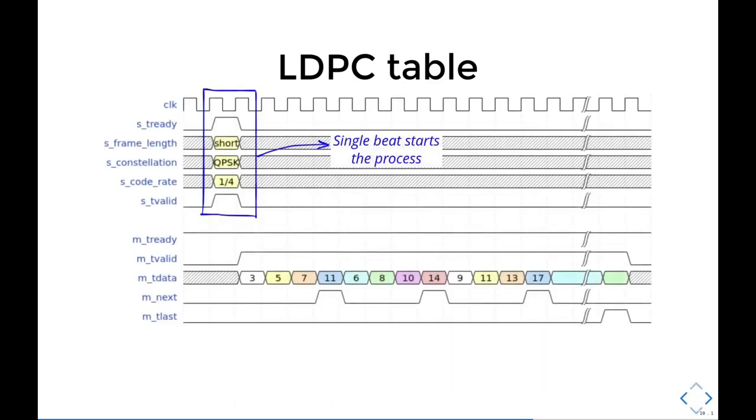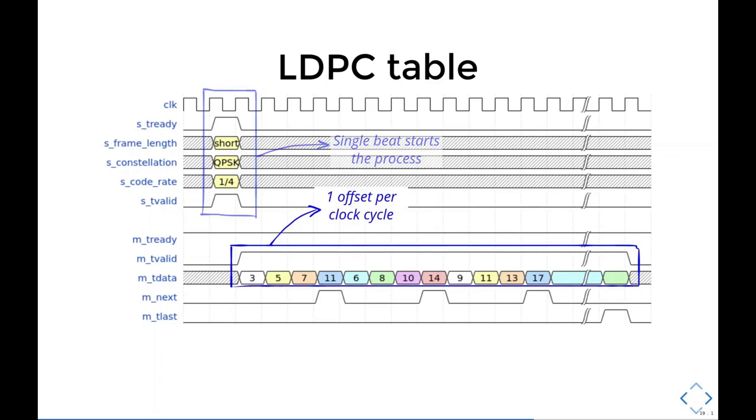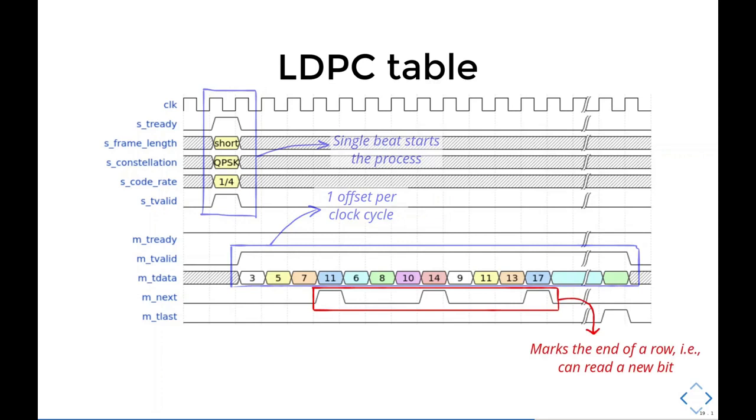Timing-wise, a single bit is going to start the process. The LDPC table then generates one offset per clock cycle. Besides the coefficients, the LDPC table generates an output called M NEXT, which marks the end of a row, that is, a new bit can be processed. This means that this period here, corresponding to offsets 3, 5, 7 and 11, are related to bit 0. Then the following period corresponds to bit 1, then bit 2 and so on. This example shows the output for the LDPC in a minute slide, so Q equals 3. And you can see that when we change from bit 0 to 1, the offset is incremented by Q, and that's going to be true for the second, for the third offsets, and so on.